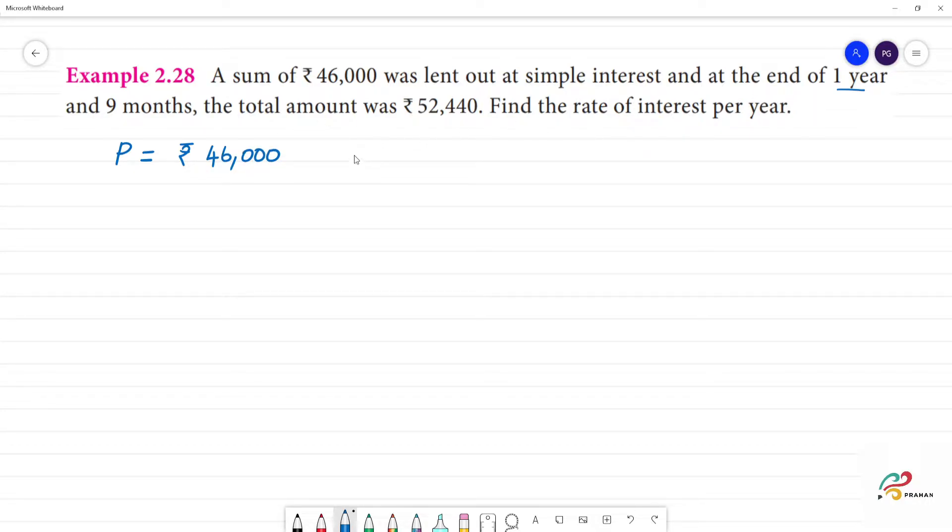The time, n, is equal to 1 year 9 months. To convert 9 months to years: 12 months equals 1 year, so 9 months is 9/12 year.